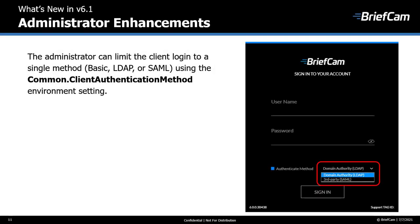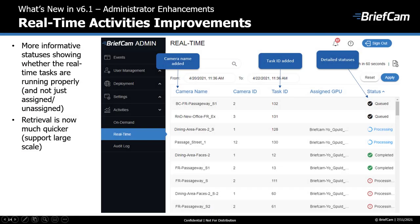Now let's have a look at some of the administrator enhancements. The administrator can now limit the client login to a single method using a new environment setting, which will affect what is shown in the sign-in screen. We also made improvements to the real-time activities screen: there are now columns for the camera name and task ID, and the items in the status column now include more informative statuses, enabling the administrator to easily see whether the real-time tasks are running properly. Previously, the administrator could only see whether the task was assigned to a GPU.